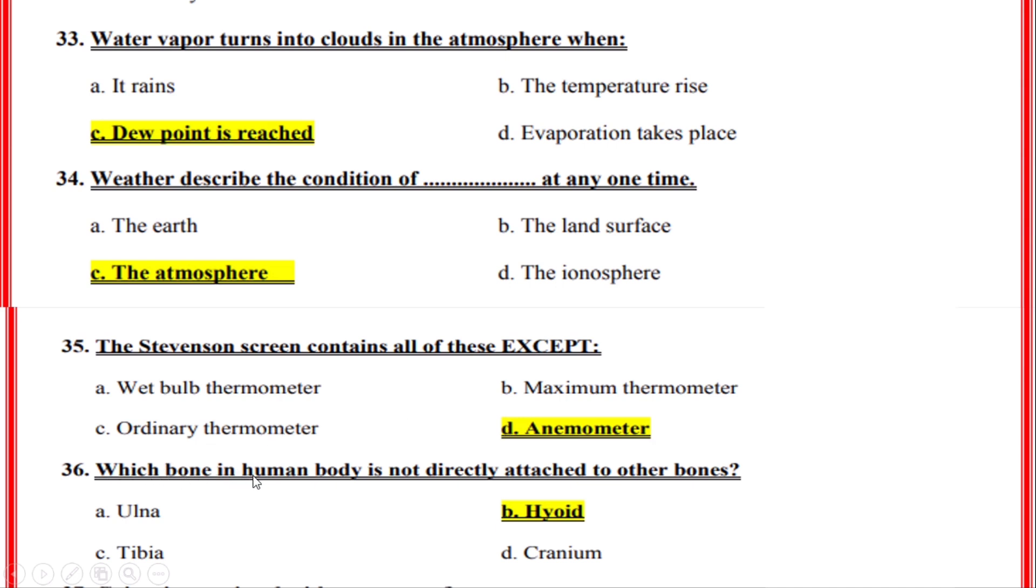Which bone in the human body is not directly attached to other bones? Correct option: B, Hyoid.